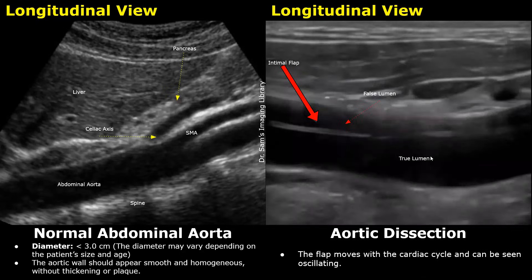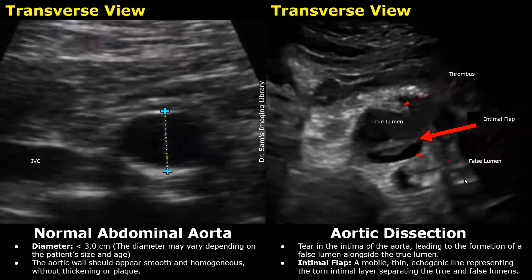Here is another image showing an aortic dissection. In real time, the flap moves with the cardiac cycle. This area is the false lumen and this is the true lumen of the aorta. Here is a transverse image showing a dissection — this echogenic linear structure is the intimal flap seen floating in the aorta. The false lumen is below the intimal flap and the true lumen is above it.